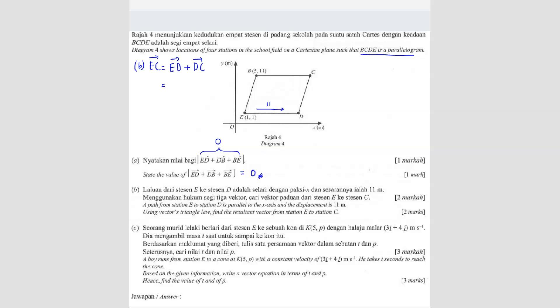So ED is given 11, right? You're moving to the right 11. So the vector is (11, 0). You're moving to the right 11 units plus DC. So what is DC? DC is actually parallel to EB, correct? So we can actually find the vector from E to B to represent DC. So we can write like this: EB, the vector of EB should be the same as DC.